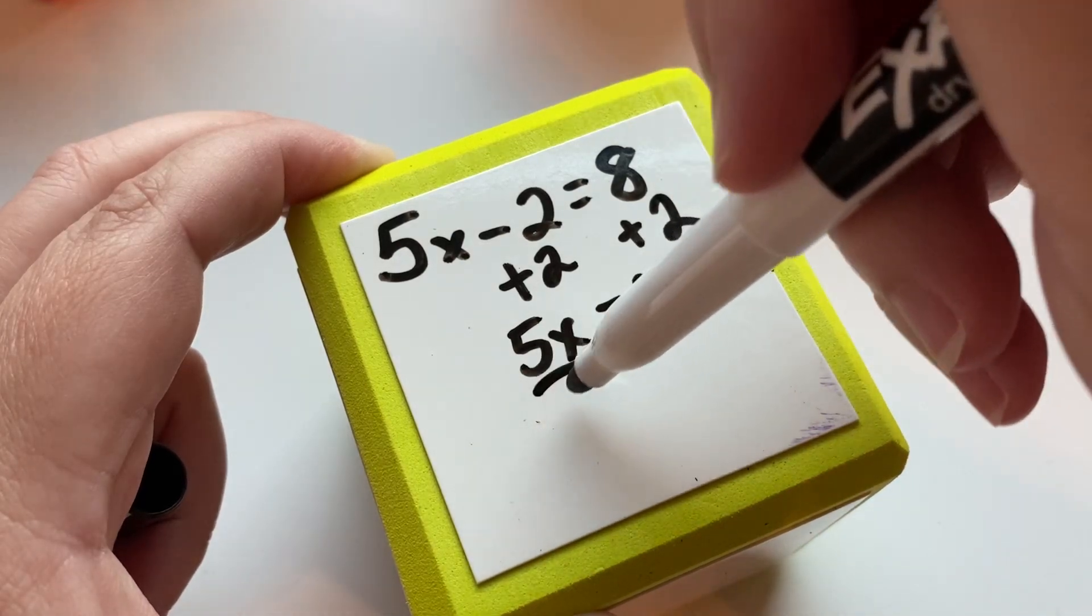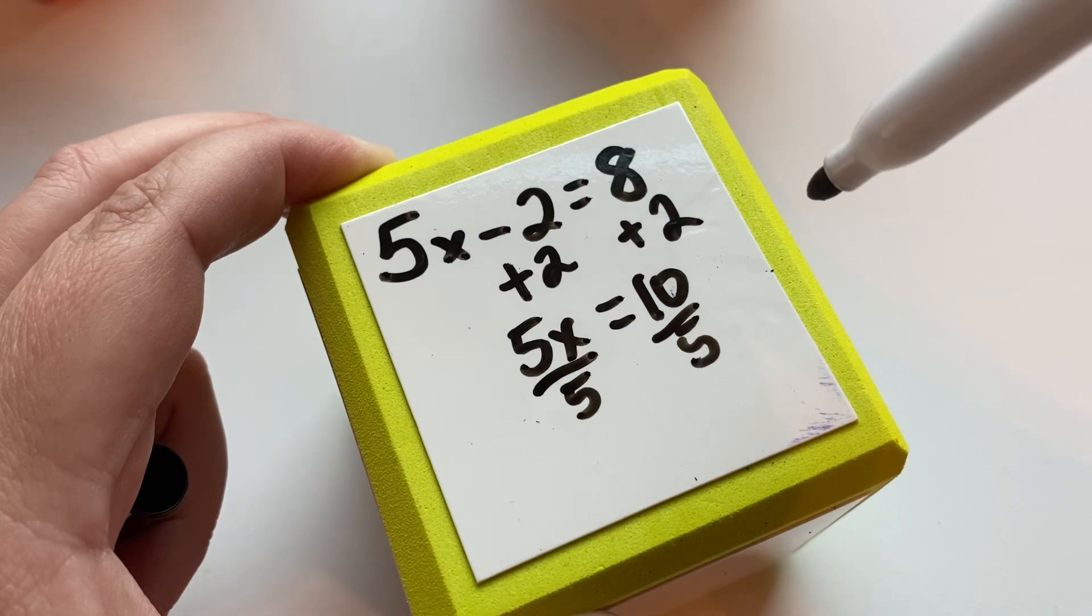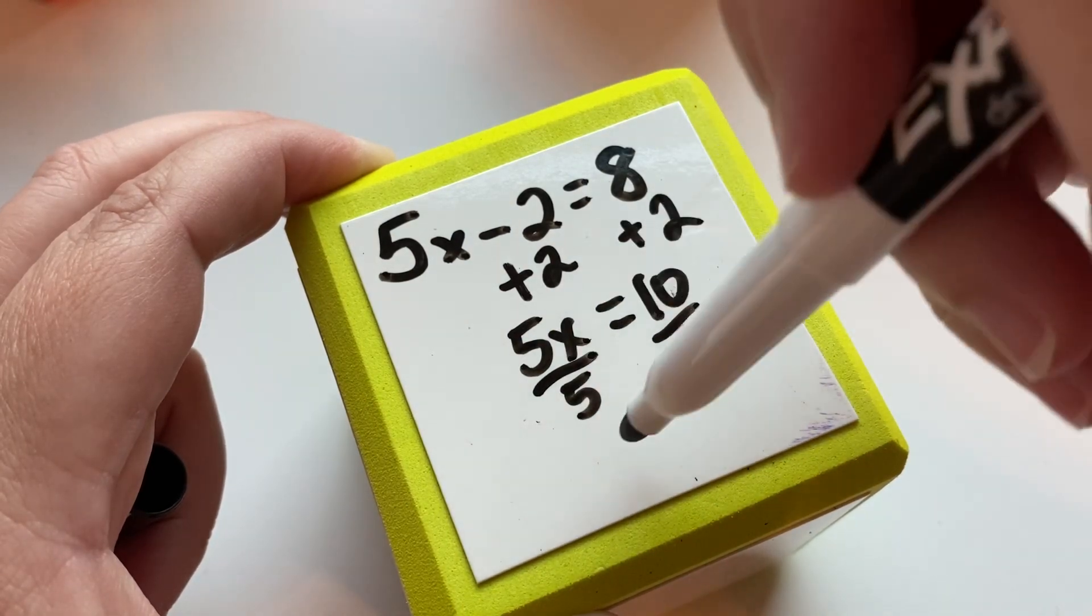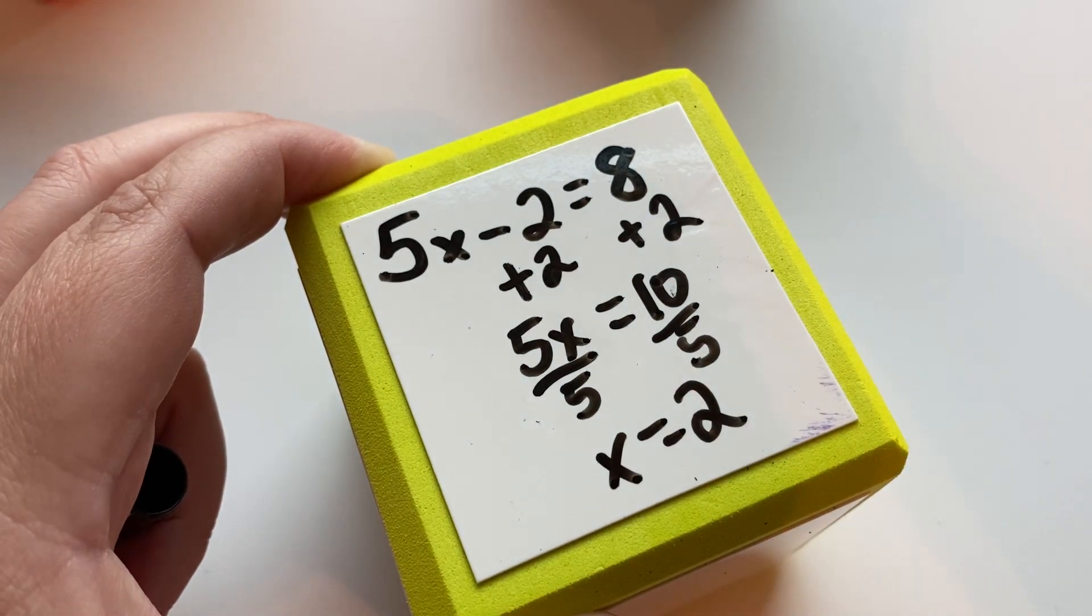This is multiplication. We're going to do the opposite, which is division. We're going to divide both sides by five. Five divided by five is one. So we're left with x equals two. Okay, see how that works.